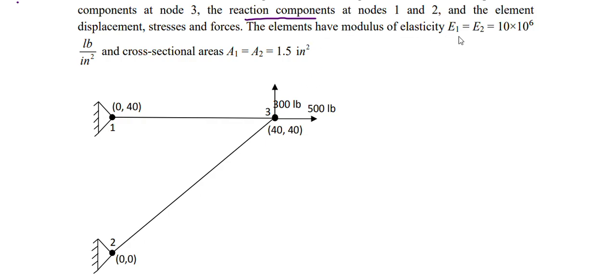The modulus of elasticity E1 and E2 is 10 into 10 to the power of 6 lb per in square, and the cross-sectional area A1 and A2 is 1.5 in square. This is a simple problem having only two elements. Let us say the first is element one and this is element two. You can choose any numbering as you wish since it is not mentioned, but the nodes are represented as node 1, node 2, and node 3 — you have to follow what is given in the question.